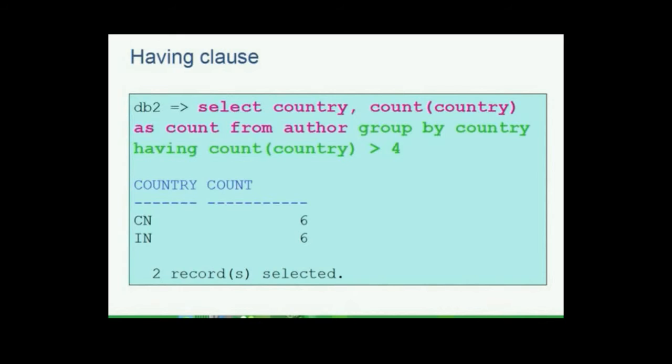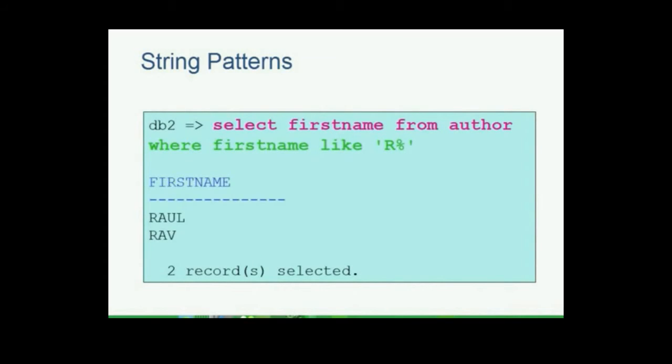How do we retrieve data when we remember only some letters in a data row and not the entire value? Not in a relational database — it offers the use of string patterns which can be used while searching data rows that match such conditions. For example: SELECT first_name FROM author WHERE first_name LIKE 'R%'. The use of % after the letter R implies the data begins with R followed by any letter or number, with no limit to the number of characters that follow.